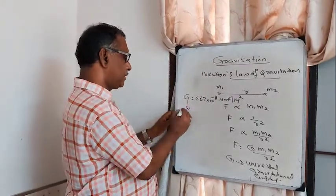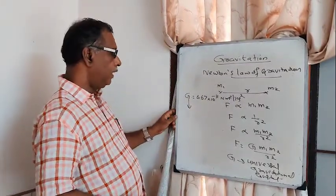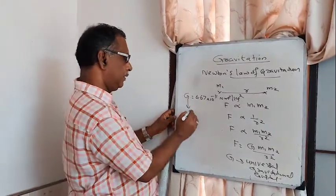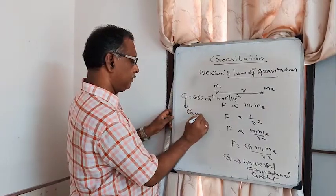The value of G was first experimentally determined by the scientist Cavendish.